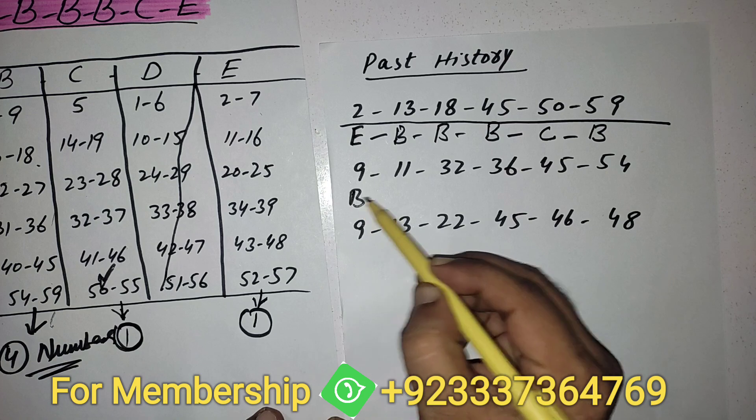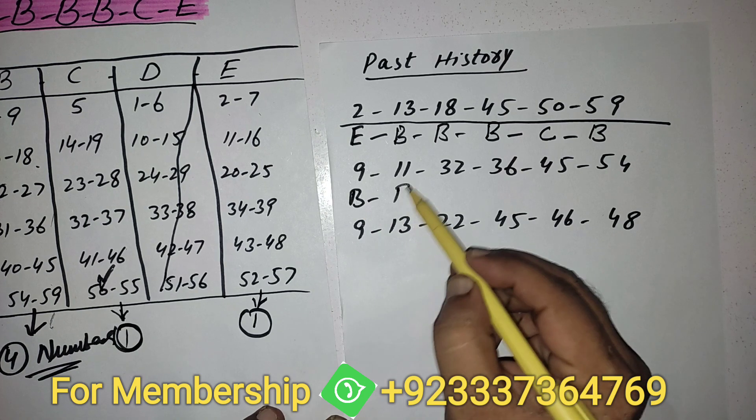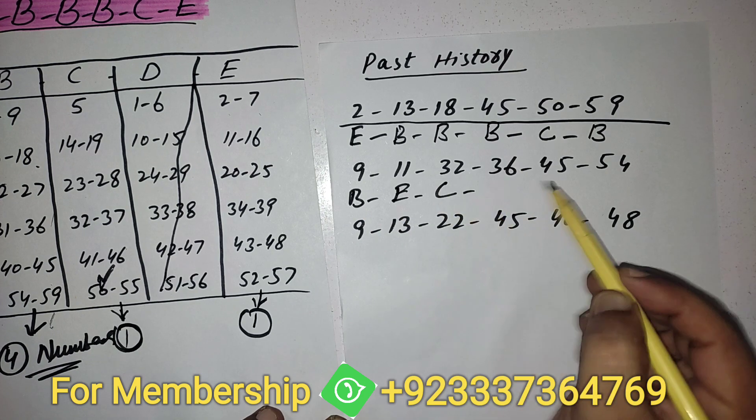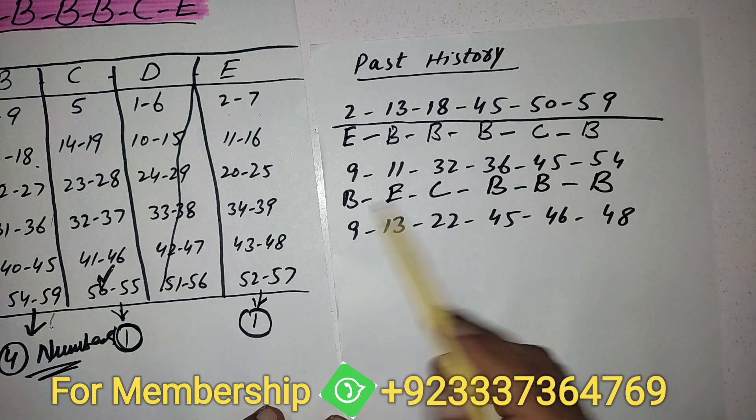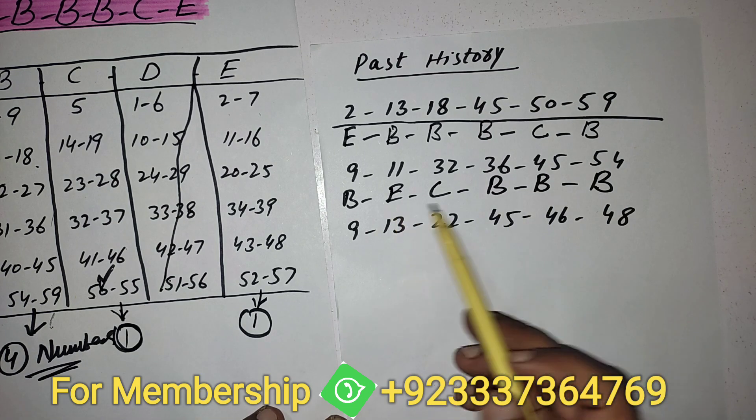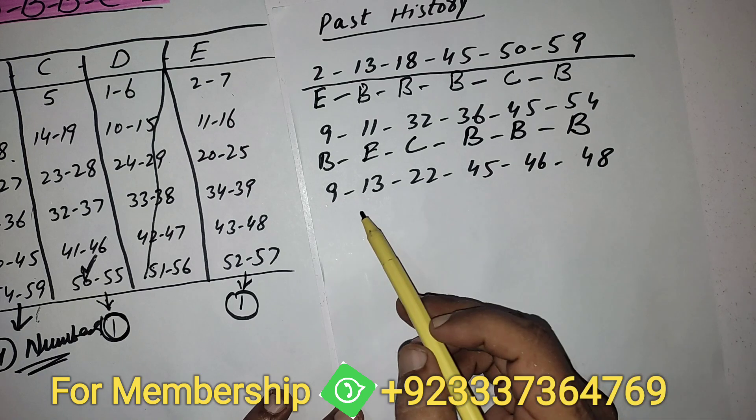9 from B, 11 from E, 32 from C, and these are all from B category. Again 4 B, one from E and one from C. And this is the latest.